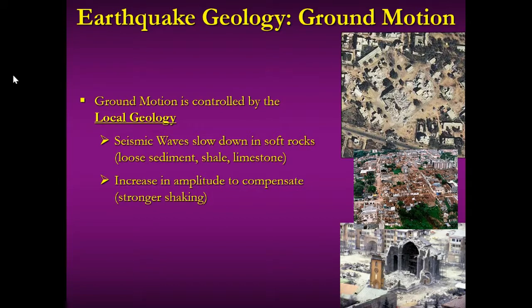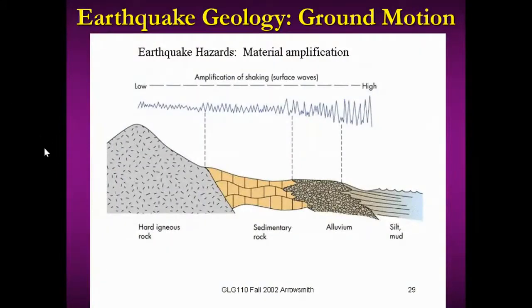The local geology of an area matters. More shaking occurs in soft sediment versus less shaking in harder sediment. Seismic waves ring through hard sediment like a bell — they get good traction as they bounce through. In soft rock and softer sediment, waves slow down because they can't get traction, and instead get bogged down, amplifying the shaking. Seismic waves ring through quickly in hard igneous rock like granite, shake more in softer rock like limestone or sandstone, bounce quite a bit more in alluvium like sand and gravel, and even more in silt and mud.